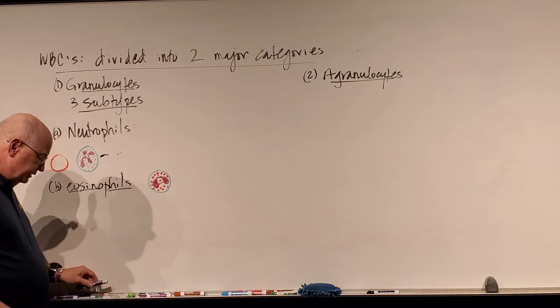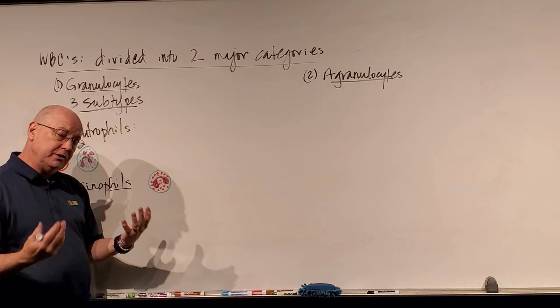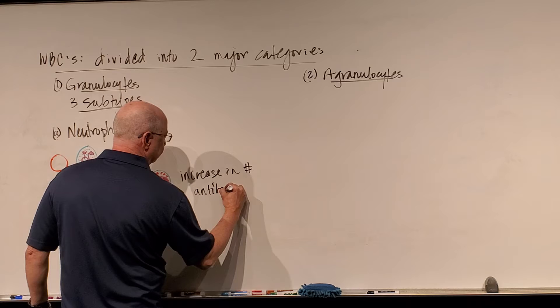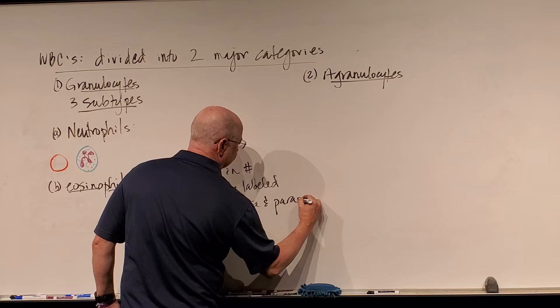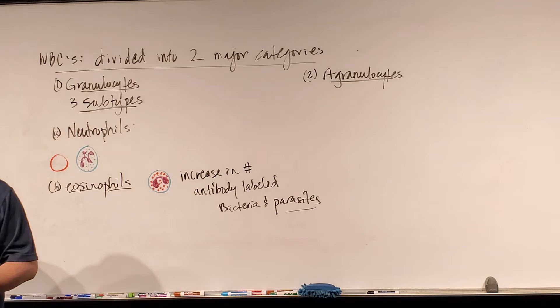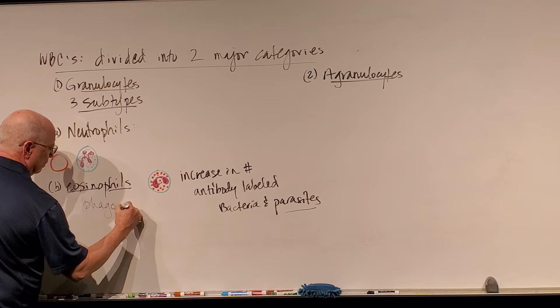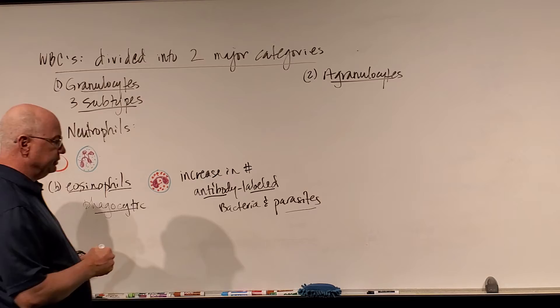A few things about eosinophils: they're not very abundant — there are a lot more neutrophils. They can increase in number and they respond to antibody-labeled bacteria and parasites. For some reason, eosinophils are very sensitive to parasitic infections and can massively increase in number due to parasitic infections. They are phagocytic.